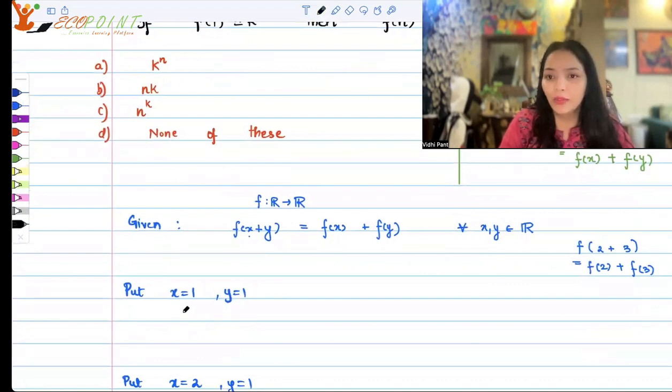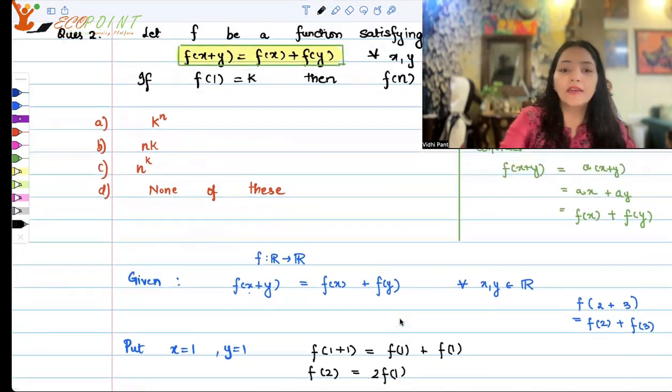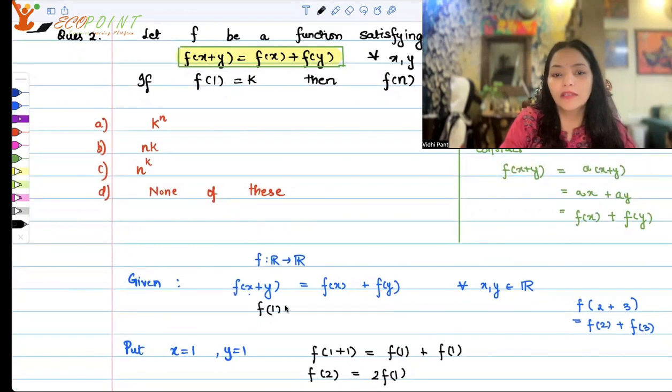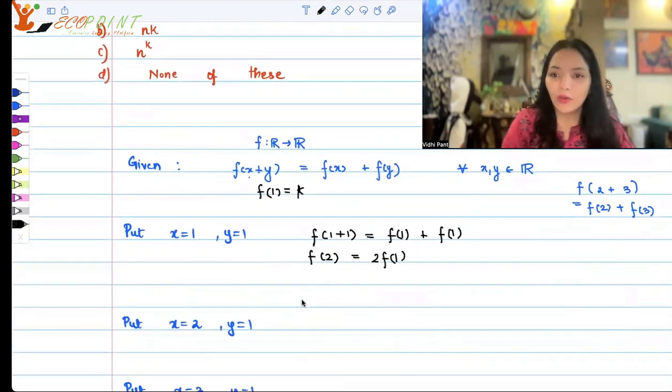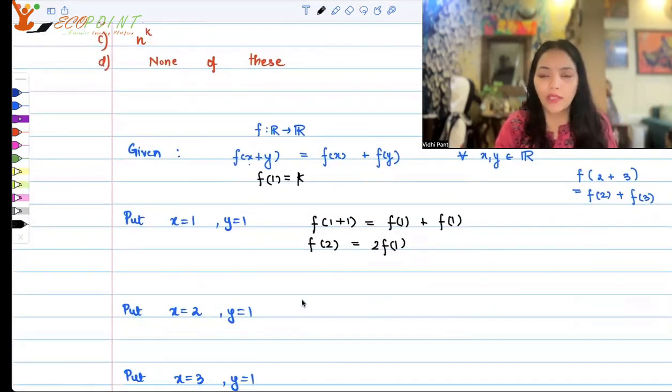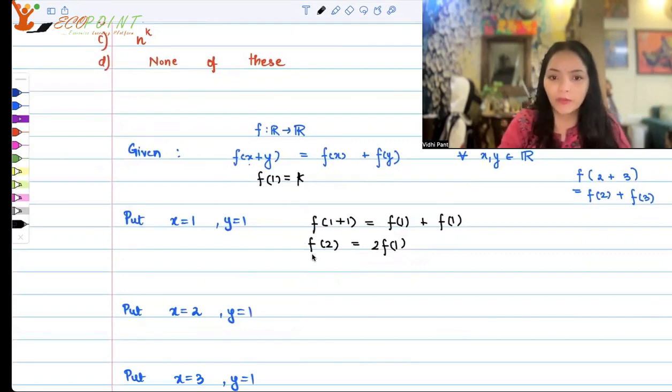Now how to go about this? Let us put x = 1, y = 1. If you put x = 1, y = 1, what will you fetch? You will fetch f(1+1) = f(1) + f(1). So f(2) = 2f(1). Why am I using that? It's because I am provided with the information that f(1) = k. So I might as well use that value somewhere, right? That's how you would think of the value of input as 1 so that we can get f(1) in the picture. So now I have the value f(2) = 2f(1).